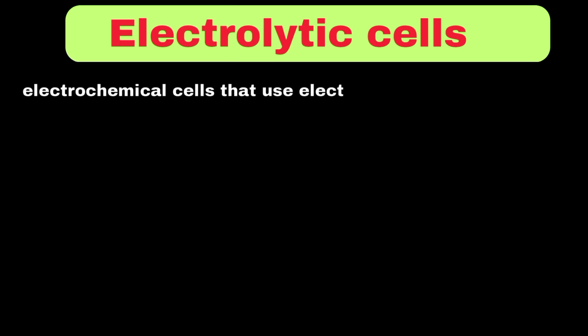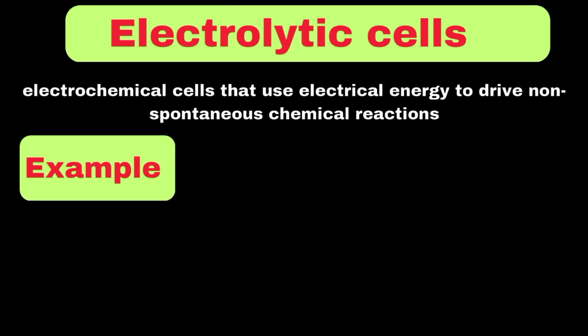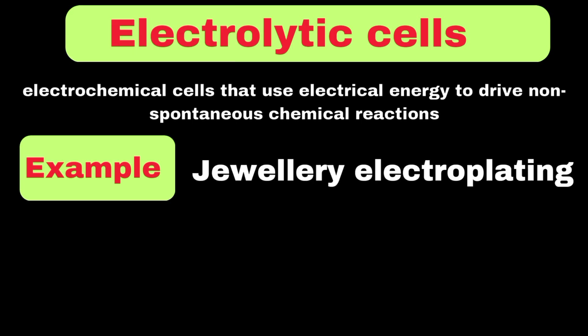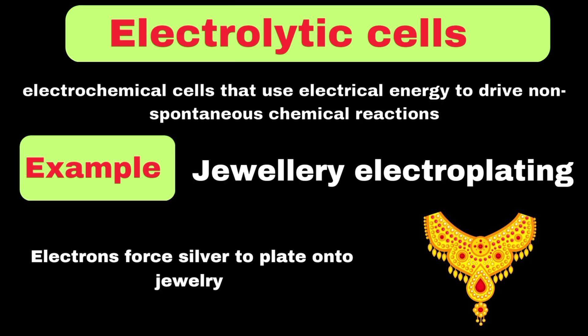Now we will move toward electrolytic cells. Electrolytic cells can be defined as electrochemical cells that use electrical energy to drive non-spontaneous chemical reactions. Let's take the example of electroplating silver onto jewelry. When we pass an electric current through a solution containing silver ions, the electrons force the silver to plate onto the jewelry surface. This process is the opposite of what happens in a galvanic cell, because it requires electrical energy input.